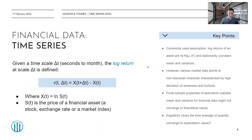With any assumption, one of course needs to be very careful, especially when looking at real world data. A big theme in Rama's paper is that this assumption doesn't hold. A lot of the data that is looked at is actually non-Gaussian in character, so the normality assumption could actually be a very poor assumption to make.